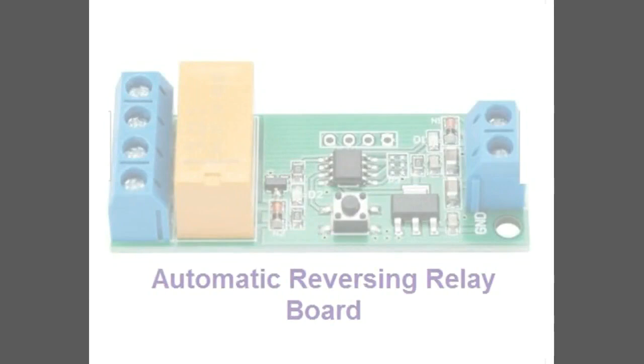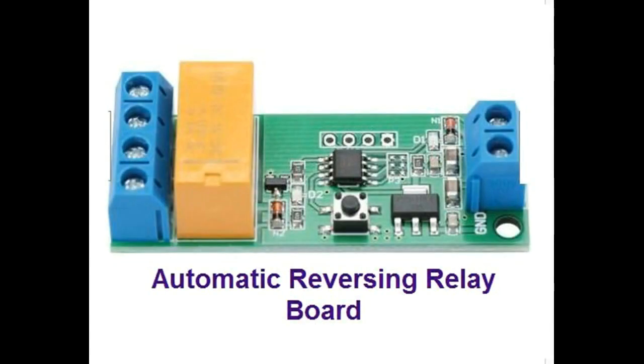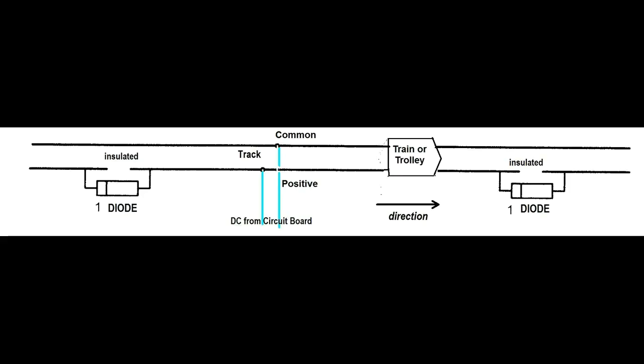This operation can be completed with a new, inexpensive automatic reversing relay board. In this point-to-point type layout, two diodes are set at both ends of the track and the locomotive or trolley is powered by variable DC current coming from the train controller via the relay board. When the train crosses the insulated end track, it stops.